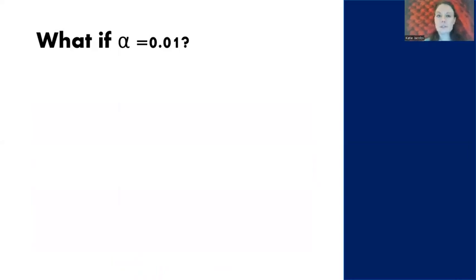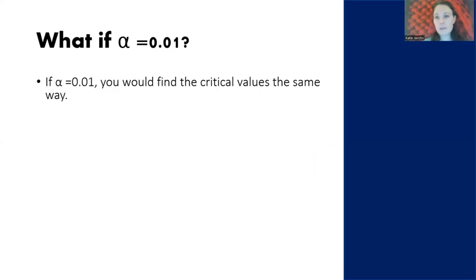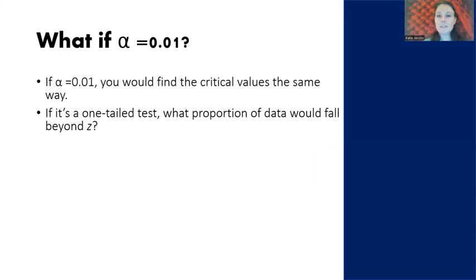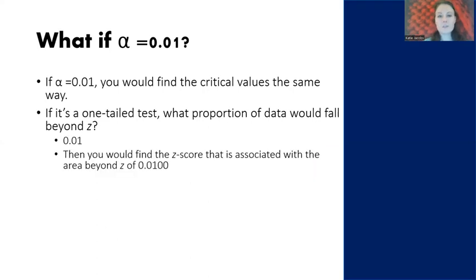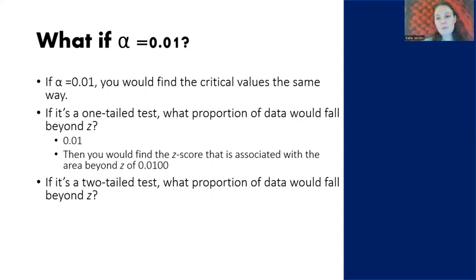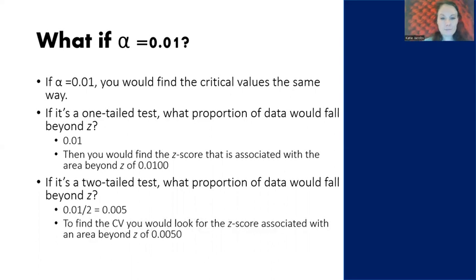If our alpha level equaled 0.01, we'd find critical values the same way. For a one-tailed test, the area beyond Z would be 0.01 — you'd look that up in the area under the curve table. For a two-tailed test with alpha equals 0.01, we split it in half: 0.0050 in each tail. You'd find the z-score associated with an area beyond Z of 0.0050.